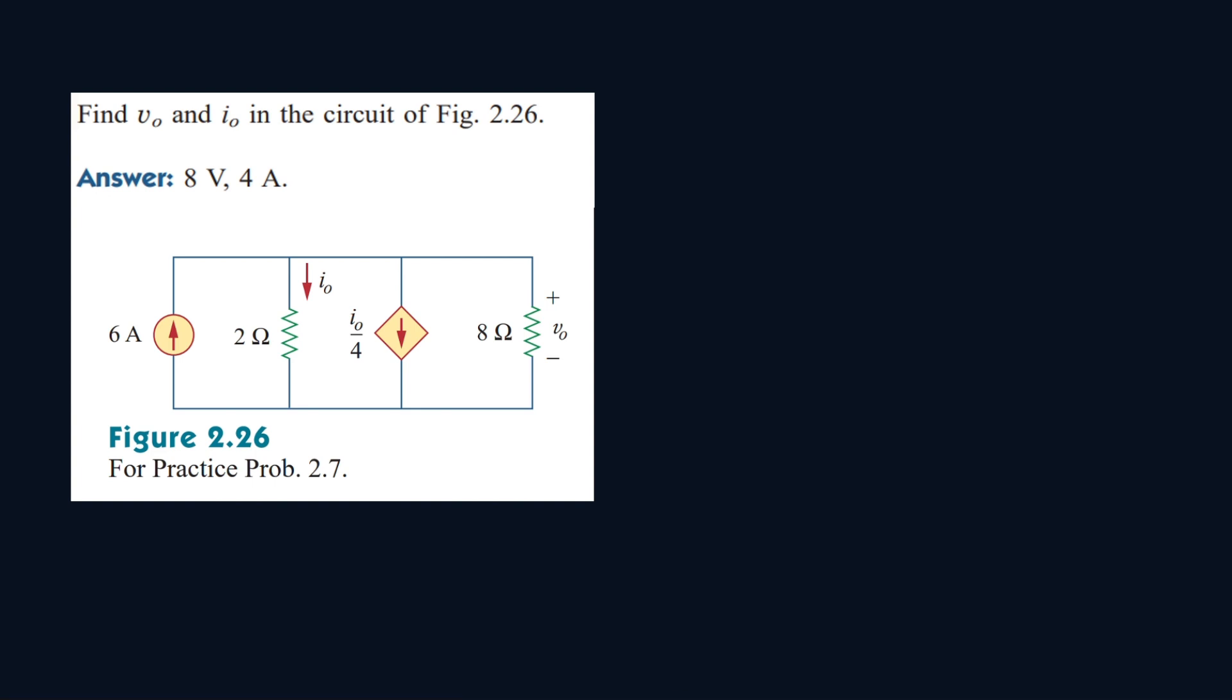We're going to find V0 and I0 for the following circuit. The answers are already given, so if you want to solve this on your own. The first thing we're going to do is we see that this whole section is technically one node. So let's call this whole section node A.